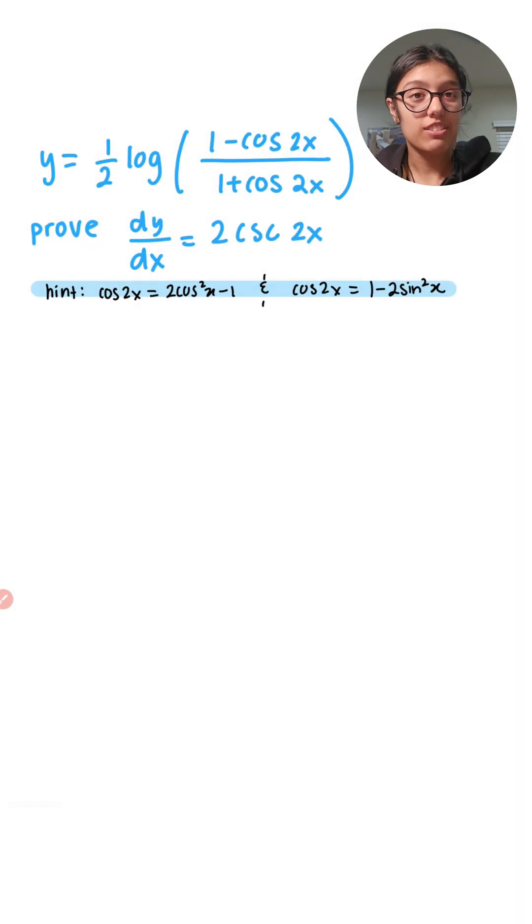Hey everyone, let's take a look at how we can solve this problem. We have y equals one half log of one minus cos 2x over one plus cos 2x, and we're trying to prove that dy over dx is equal to 2 cosecant of 2x. I've given you two hints over here if you want to pause this video and give this problem a go.